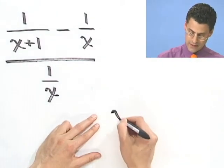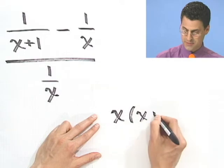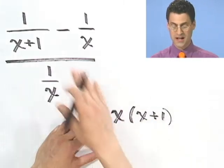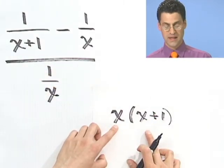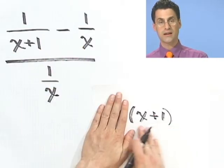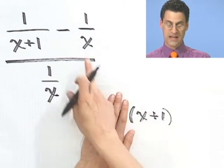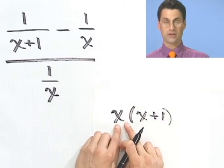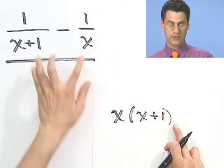It would be x times x plus 1. So I'd multiply the top and the bottom by this. And if I did that, I'd cancel all the denominators. See, I've got to cancel that thing and that thing. This just wouldn't cut it, because that would not be able to cancel with the x. I need to have a factor of x there. So this is the least common multiple of all these people.